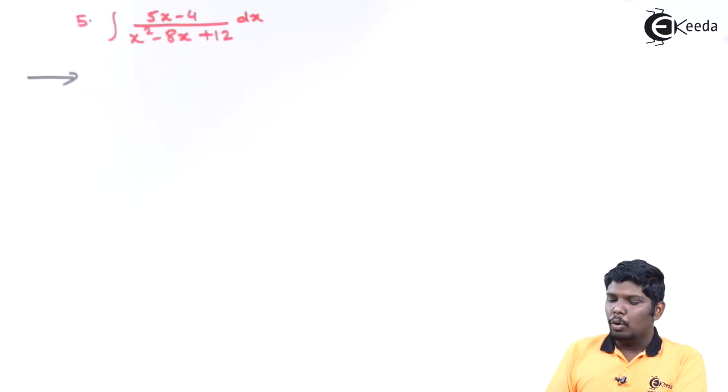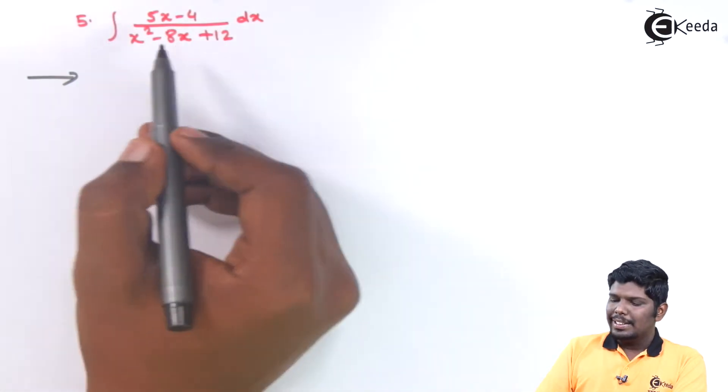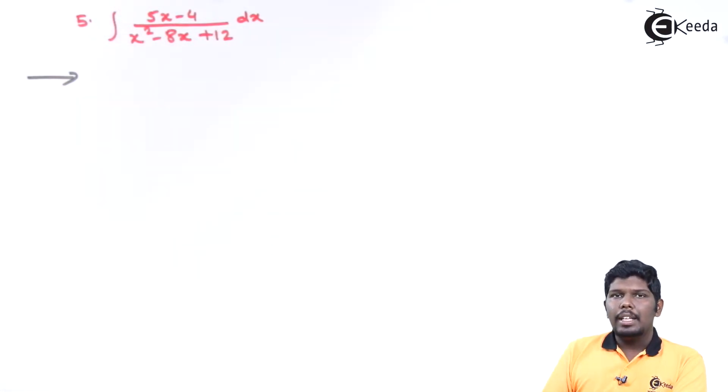Integrate 5x minus 4 upon x square minus 8x plus 12 dx. Here you can see in the denominator the polynomial is not in a factorized form. Therefore first let us try whether it is factorizable or not.